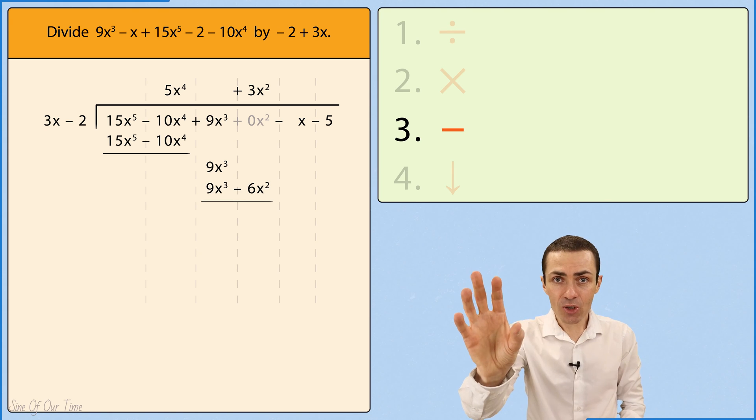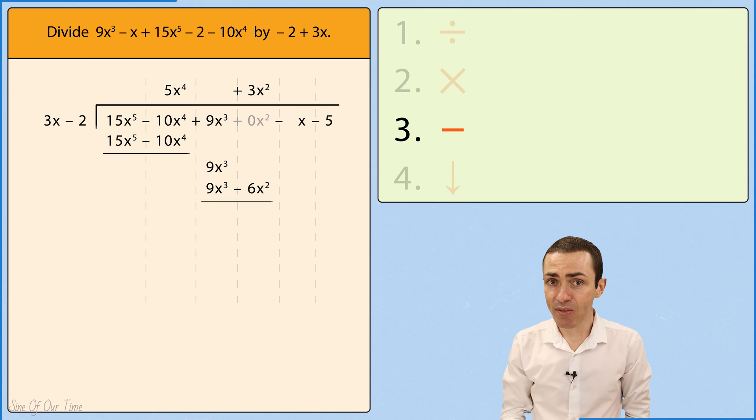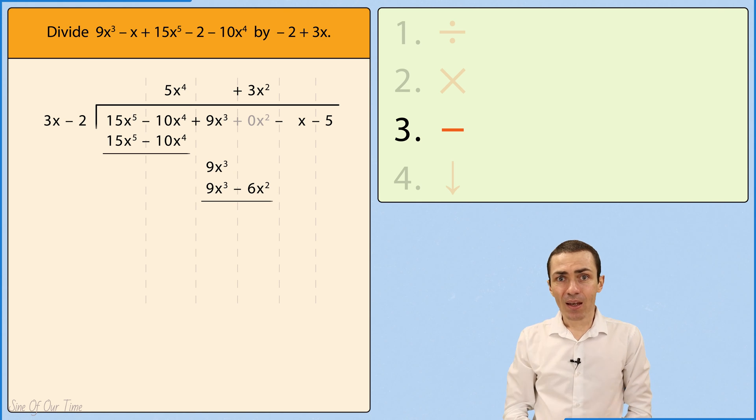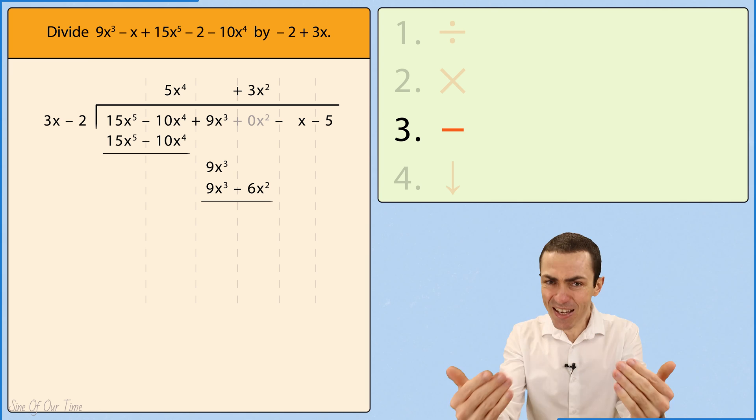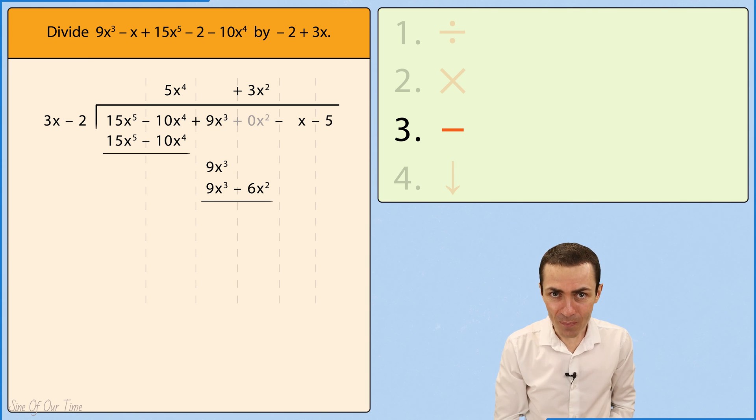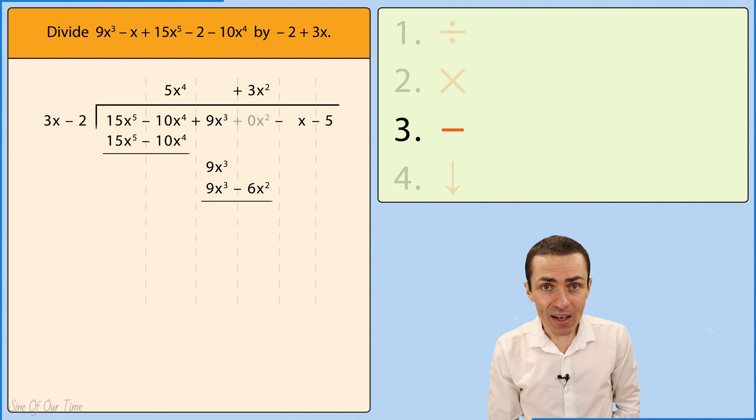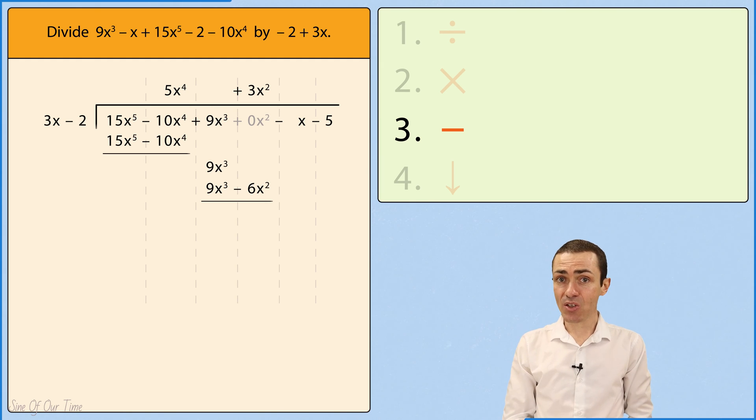And then 9x cubed subtract 9x cubed gives us 0x cubed. No surprises there. However, it appears that we have nothing to subtract negative 6x squared from, but we can bring down that 0x squared placeholder that we inserted earlier.